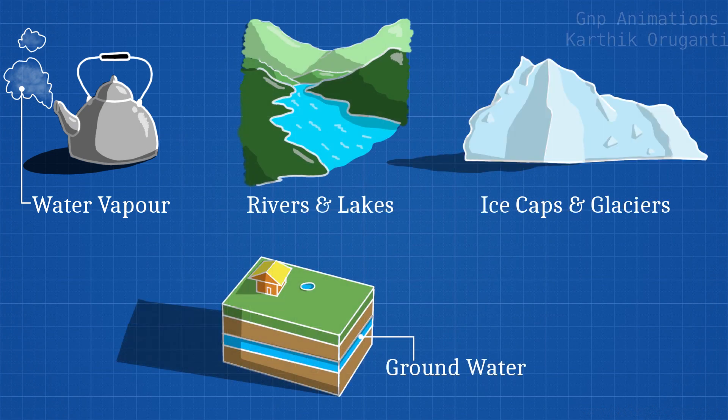We know 71% of the earth's surface is covered with water. The oceans hold about 96.5% of all earth's water. Water also exists in the air as water vapor and in rivers and lakes, in icecaps and glaciers, and in the ground as groundwater. In this video, we are talking about groundwater.